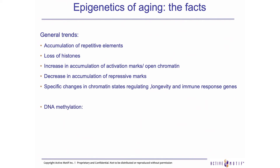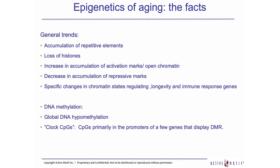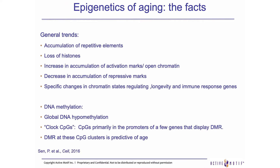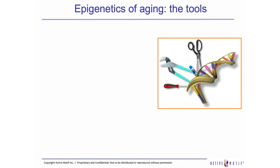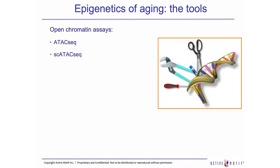In regards to DNA methylation, we and other labs have seen global DNA hypomethylation during aging, and a series of biomarkers that present differential methylation profiles during aging that can be really predictive of age. The tools that we and other labs are using are assays based on chromatin accessibility — ATAC-seq and single-cell ATAC-seq — and assays based on DNA methylation profiling, such as RRBS, global methylation assays, and MeDIP.